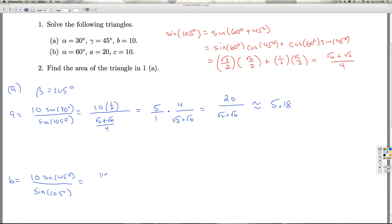Over here, I get 10 times radical 2 over 2, divided by this. Which is going to give me 5 radical 2 over 1, times this.